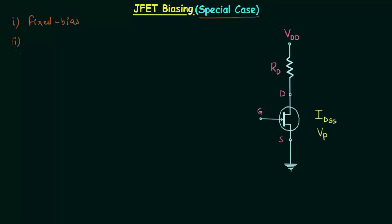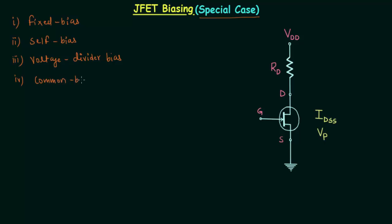The second one was self-bias configuration. The third one was voltage divider bias. The fourth one was common base configuration.